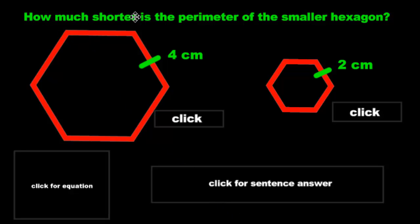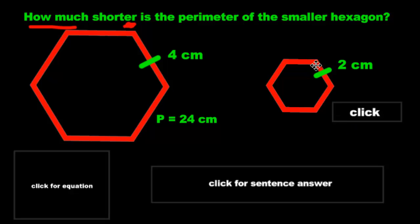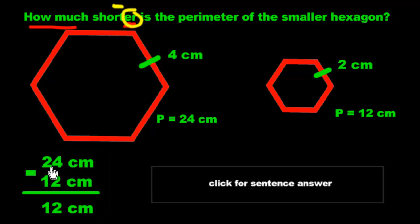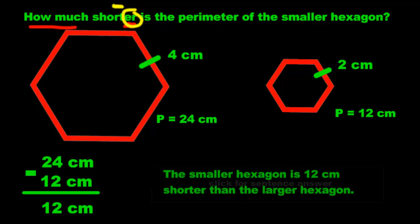Last question: how much shorter is the perimeter of the smaller hexagon? The clue is the ER word — 'shorter' — which means subtraction. They only give me one side of each hexagon, but all sides of a regular hexagon are the same length. So the larger hexagon is four plus four plus four plus four plus four plus four, which equals 24 centimeters. The smaller hexagon is two plus two plus two plus two plus two plus two, which equals 12 centimeters. Subtract: 24 minus 12 equals 12. So the smaller hexagon is 12 centimeters shorter than the larger hexagon.